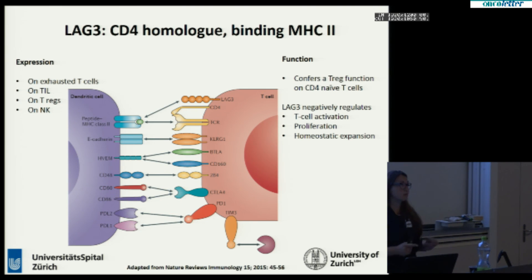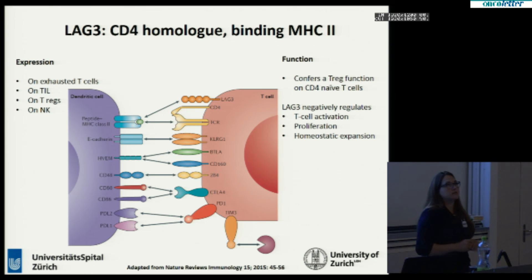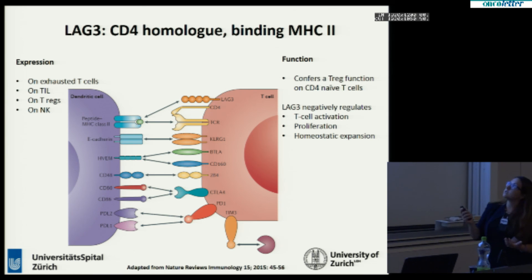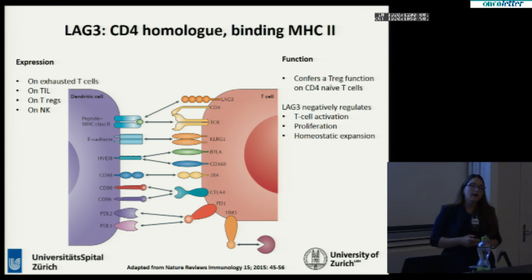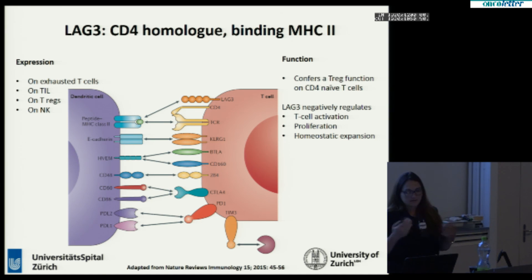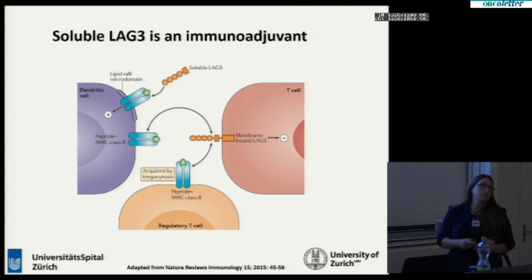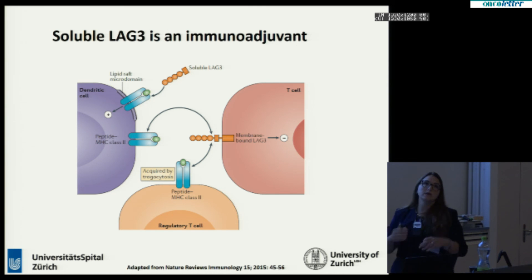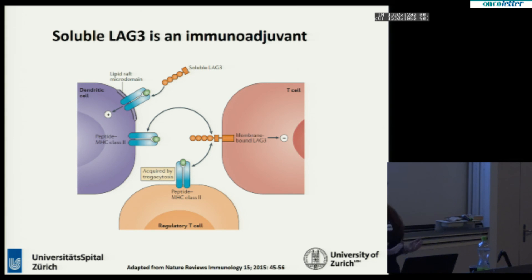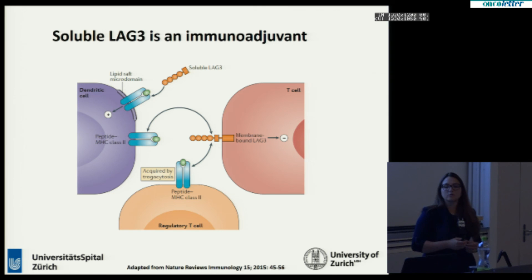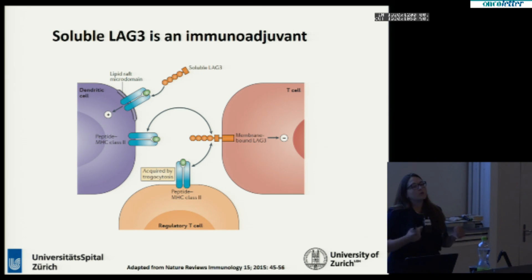Let's conclude with LAG3, which is for me the typical example of a high level of complexity. LAG3, from one point of view, competes with CD4. CD4 interacts with MHC class 2, so LAG3 competes with CD4 and therefore blocks T cell activation of CD4, the proliferation, and at the same time leads to a Treg function of the CD4 T cells. But interestingly, there is a soluble form of LAG3, and when it is soluble, this form becomes an immunoadjuvant — a stimulatory signal for the MHC. I wanted to conclude with this molecule to explain how complex it is, and when we think about how we want to treat patients, we also have to think about how these molecules really work. Thank you very much for your attention.